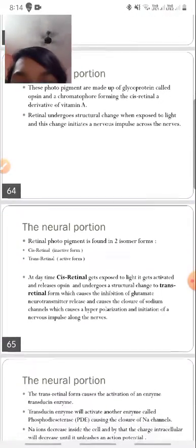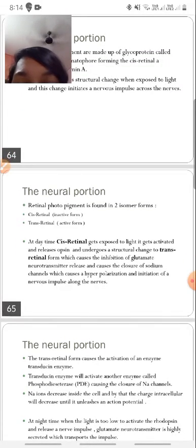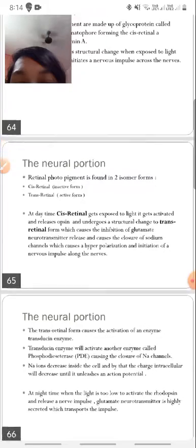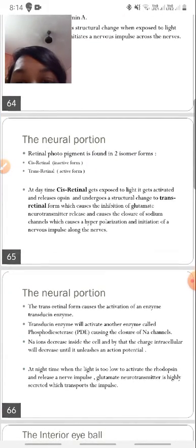Now a little bit about the physiology of vision, which shall also be covered in the subsequent classes. In short, we should know that there are two forms, two isomers present in the retinal photopigments. First is the cis retinal, which is the inactive form, and another is the trans retinal, which is the active form. So at daytime, the cis retinal gets exposed to light, it gets activated and releases opsin and undergoes a structural change to trans retinal form.